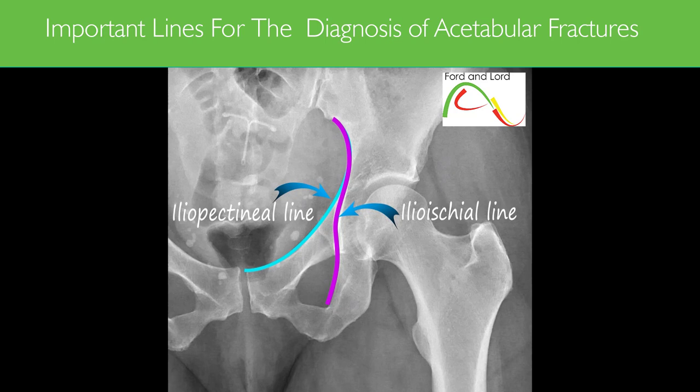The ilioischial line also starts at the sciatic notch, moves inferiorly to the medial border of the ischium, and delineates the posterior column of the acetabulum. The ilioischial line is used to evaluate the posterior column.